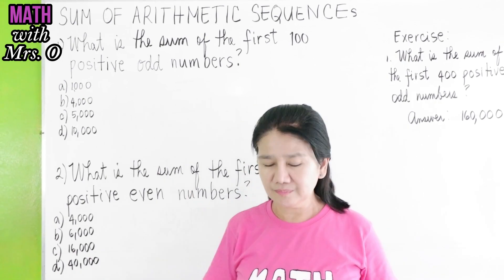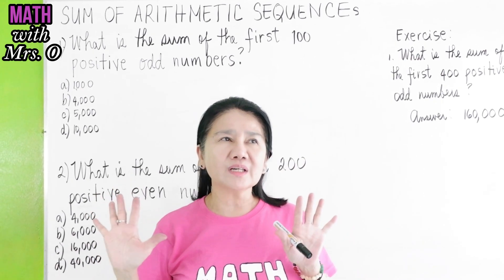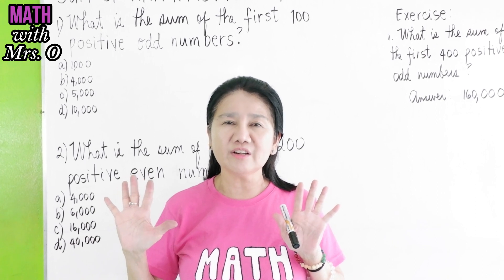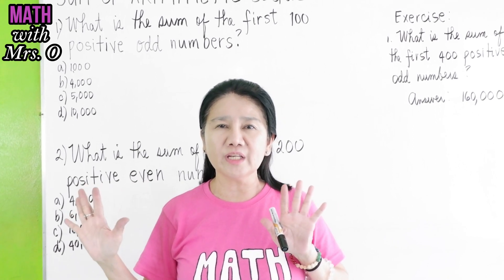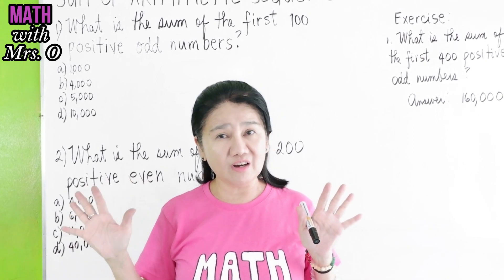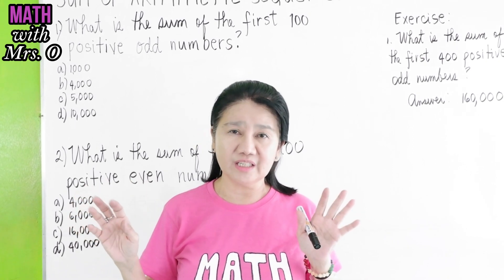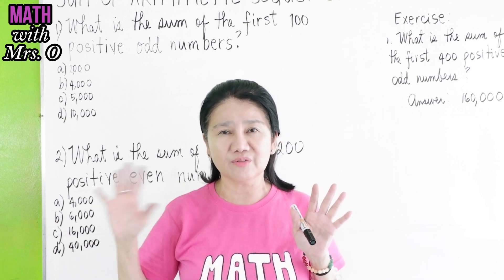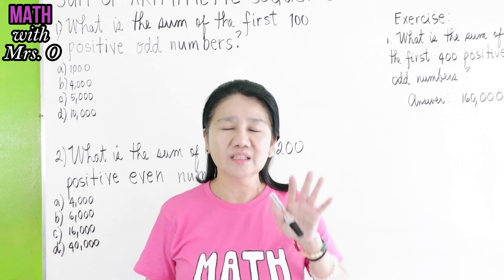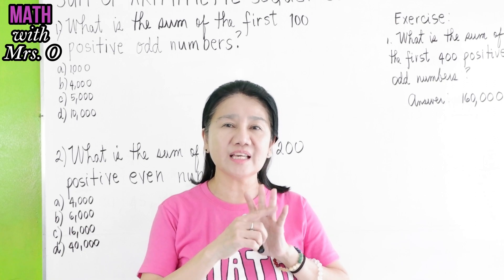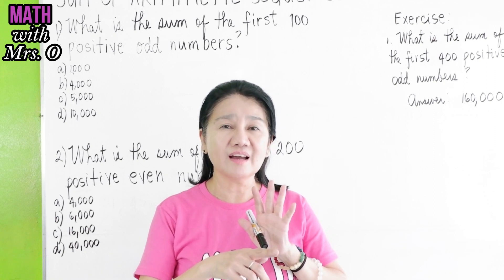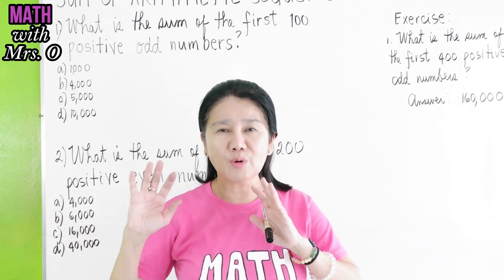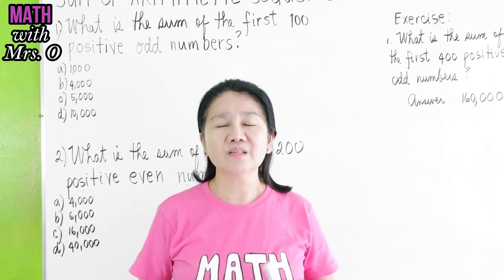If we have numbers from 1 to 10, how many are odd and how many are even? 5 are odd, 5 are even. 1, 3, 5, 7, 9 are odd — so there are 5 odd. And 2, 4, 6, 8, 10 are even — 5 odd, 5 even from 1 to 10.